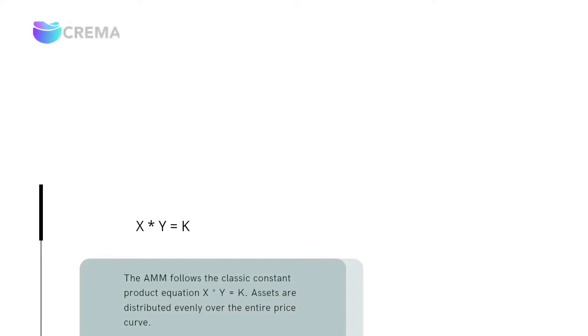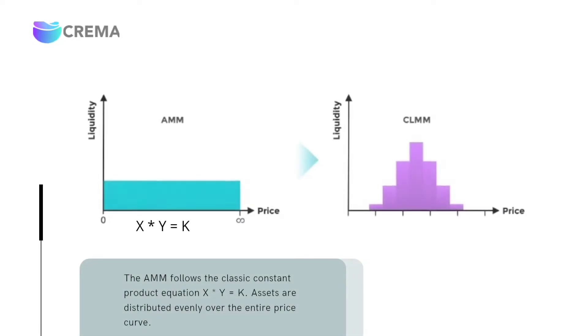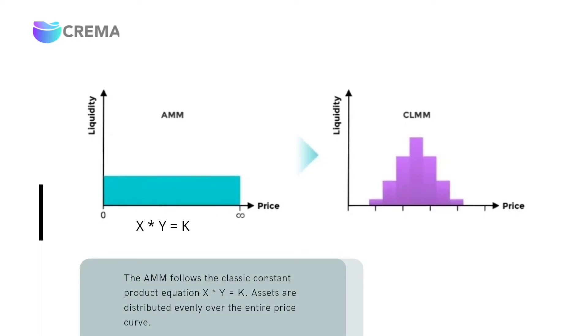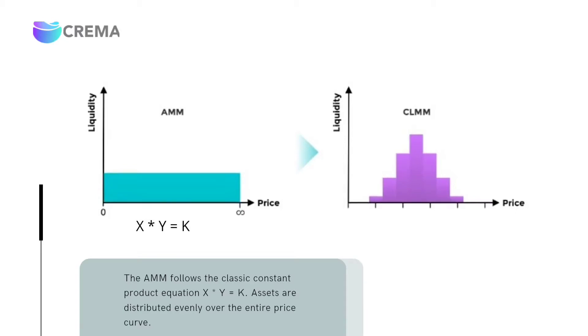The AMM follows the classic constant product equation: X times Y equals K. Assets are distributed evenly over the entire price curve.